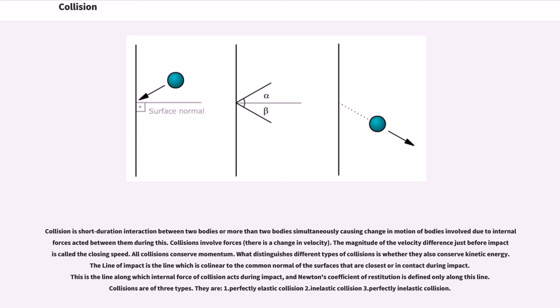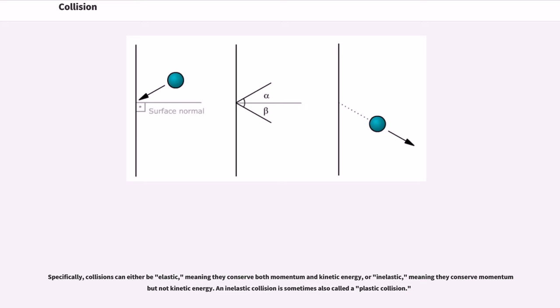1. Perfectly elastic collision, 2. Inelastic collision, 3. Perfectly inelastic collision. Specifically, collisions can either be elastic, meaning they conserve both momentum and kinetic energy, or inelastic, meaning they conserve momentum but not kinetic energy.